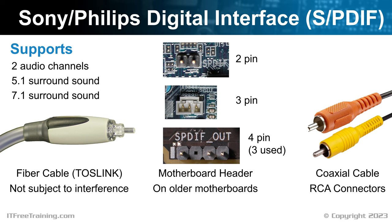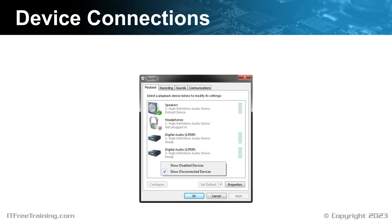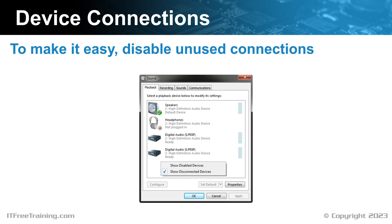Since a motherboard can have multiple different audio connections, these can all appear in the operating system as different devices. In this example computer, there are five audio jacks and two SPDIF connections — one in the I/O area and one on the motherboard. When you start getting a lot of audio devices on the same computer, it can be difficult to determine which is the one you want to use. To make things easy, consider disabling any devices that you are not using.